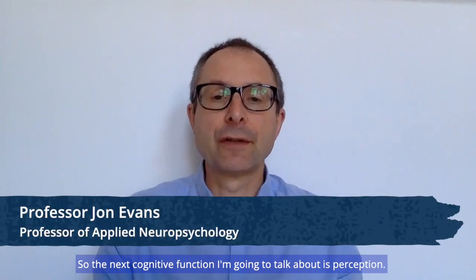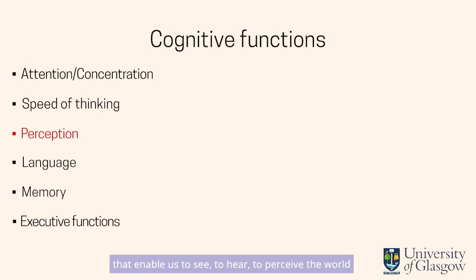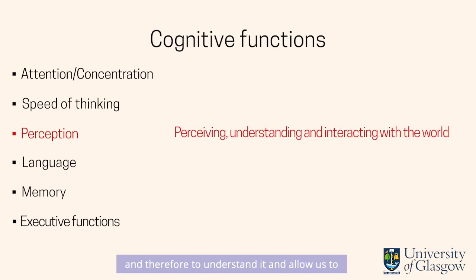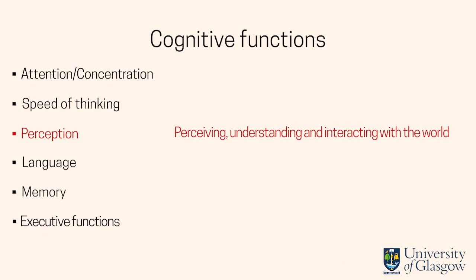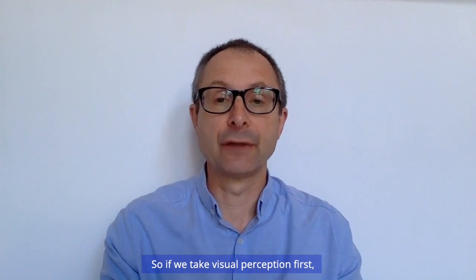The next cognitive function I'm going to talk about is perception. These are our brain systems that enable us to see, to hear, to perceive the world and therefore to understand it, and allow us to interact with things in the world. If we take visual perception first, we can think about our eyes and the information coming from the outside world.